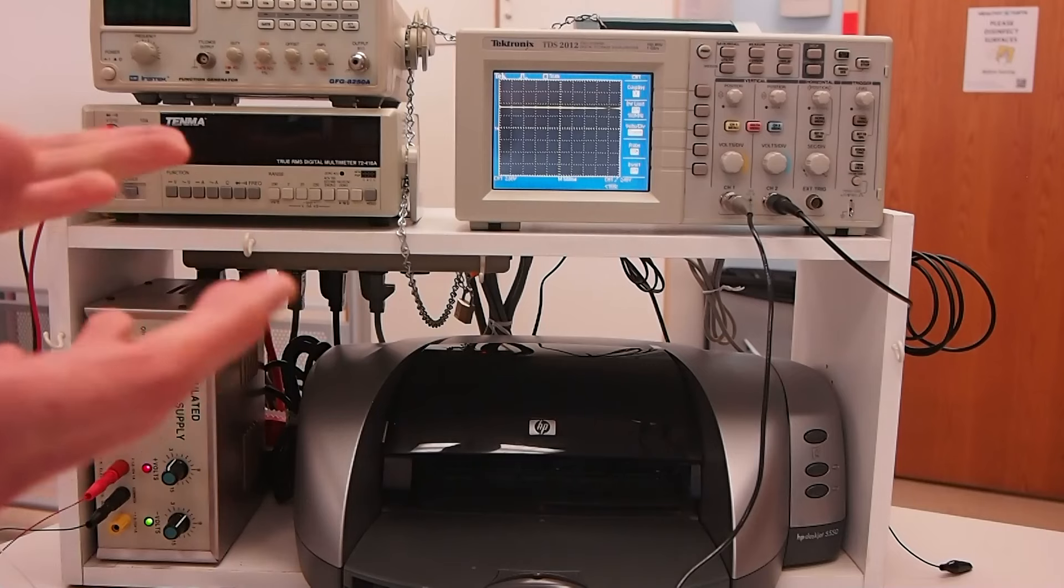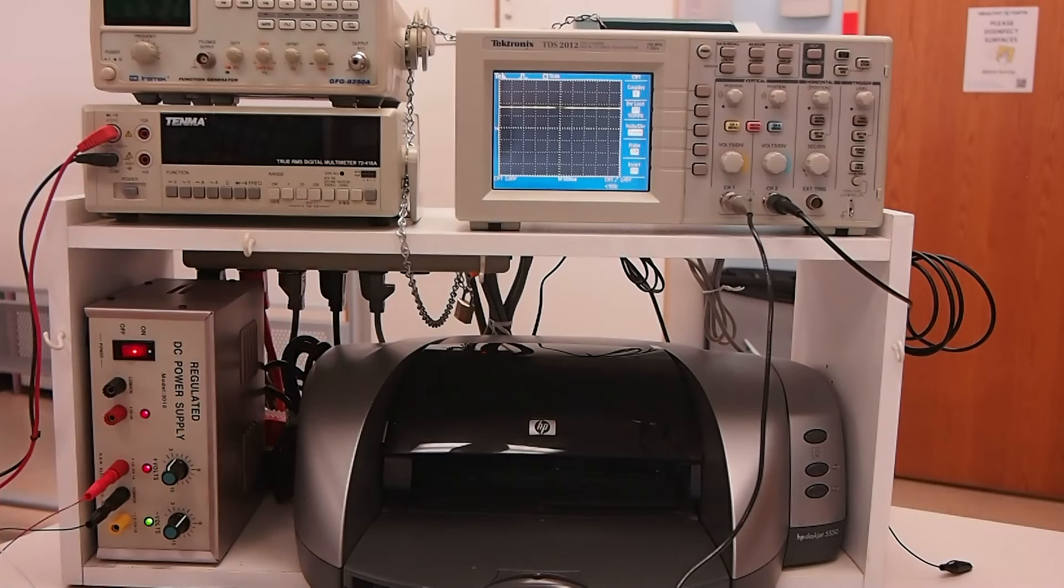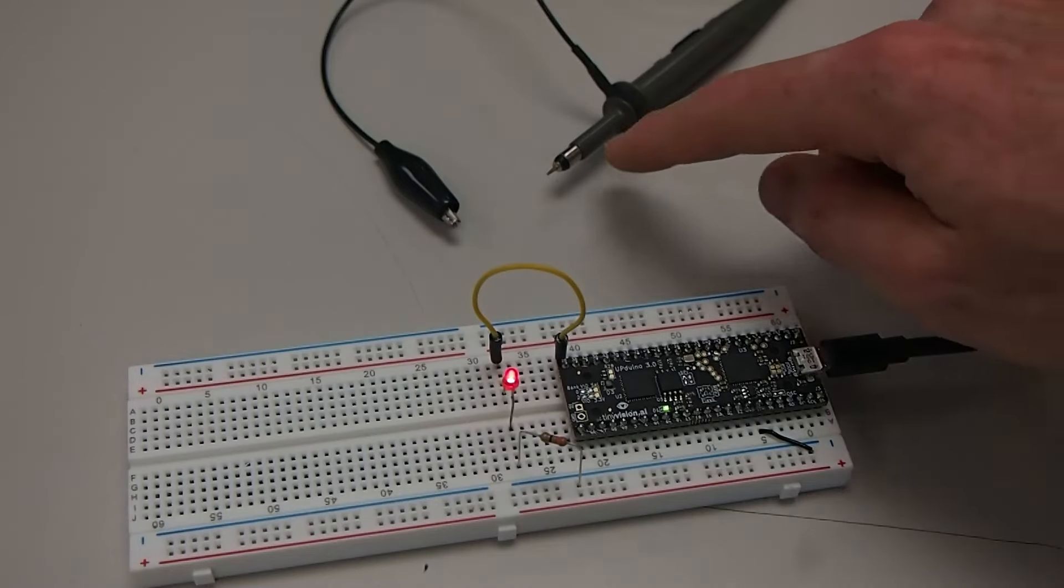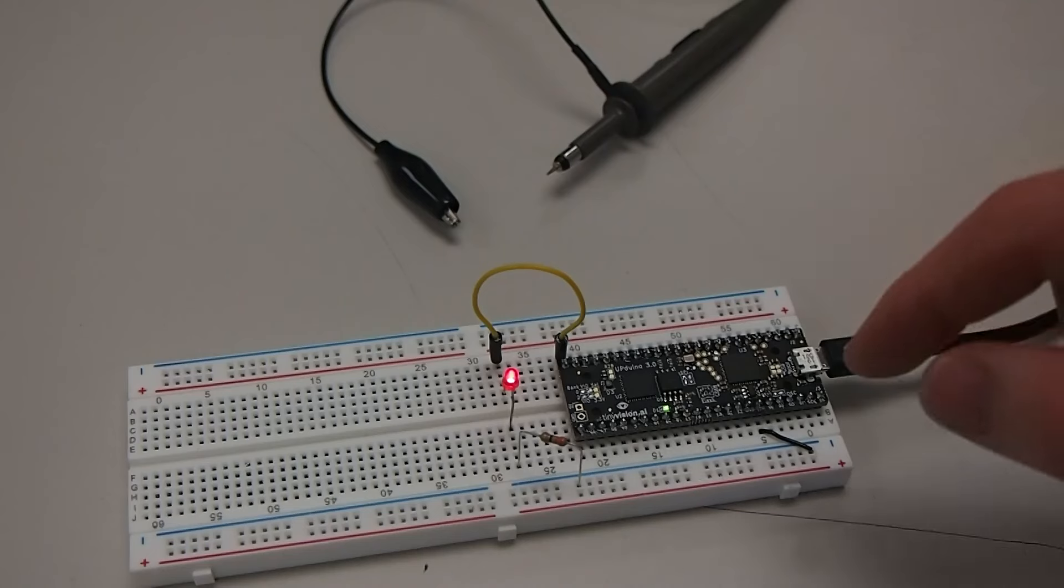Okay, so let's go ahead and look at how we'd measure a faster signal and hook it up. Here we've got the oscilloscope probe and a simple circuit that we're going to try to measure what's going on here.